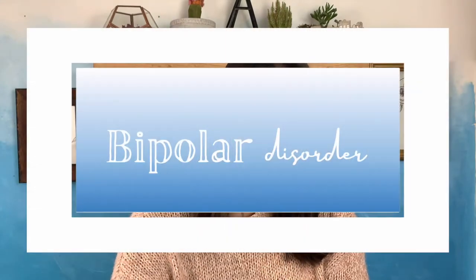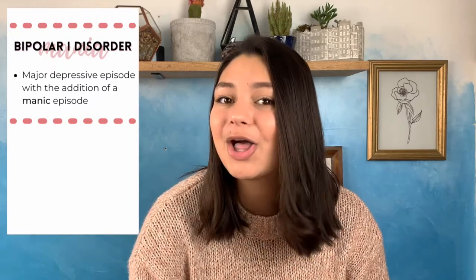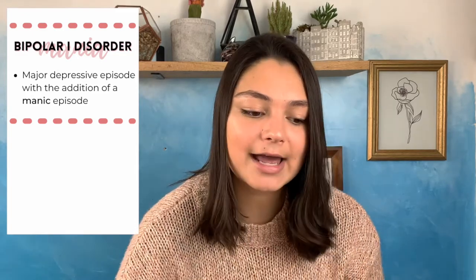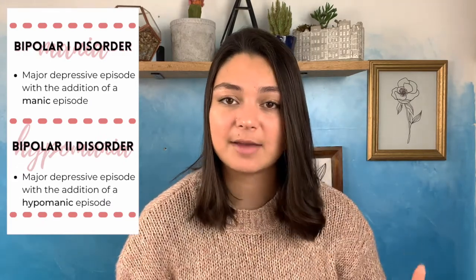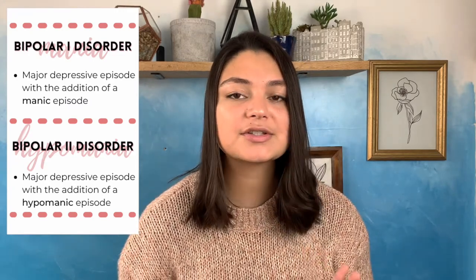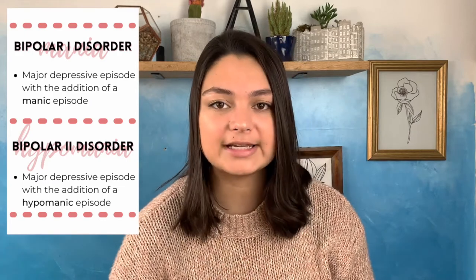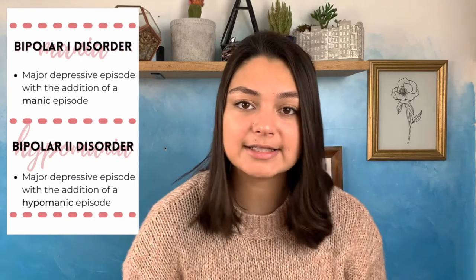Number three: bipolar disorder — the differences between bipolar 1 and bipolar 2. Bipolar 1 is major depressive disorder along with at least one manic episode. A manic episode is defined as three or more of the following lasting at least one week: inflated sense of self, little need for sleep, talking loudly and rapidly, easily distracted, increased activity, engaging in risky behaviors, and racing thoughts. Bipolar 2 involves major depressive disorder plus one or more hypomanic episodes — slightly less intense, lasting four or more days and not as severe.